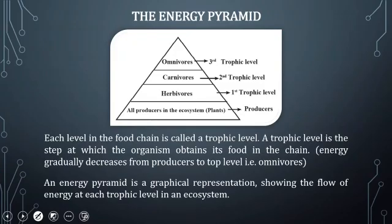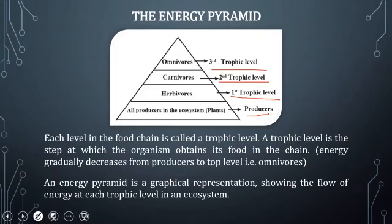Each level in the food chain is called a trophic level. A trophic level is a step at which the organism obtains its food in a chain.